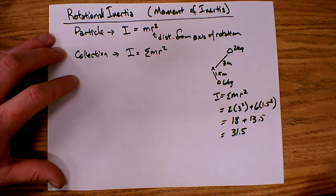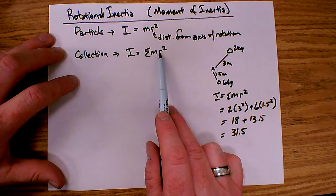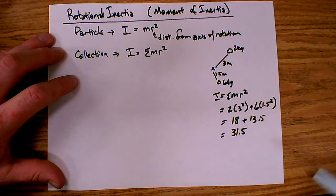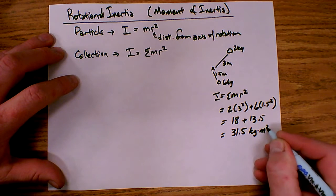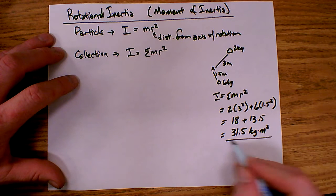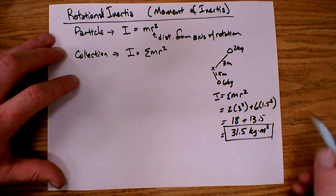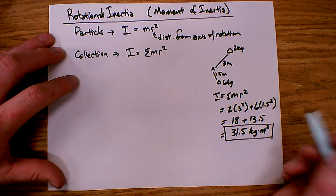Now what are the units of inertia? Mass units are kilograms, and distance units are meters squared, so the units are kilogram meters squared. So 31.5 kilogram meters squared is the inertia for this two-particle system.